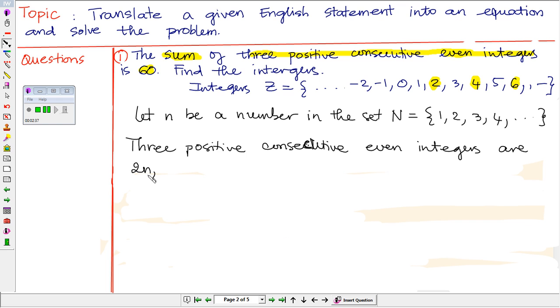The three positive consecutive even integers are 2n. If n is 1, then the first even integer is 2, and the one right after that will be 2n plus 2, so you get 4. The third even integer will be 2n plus 4.